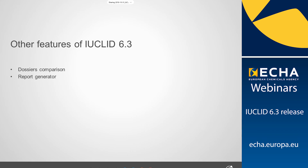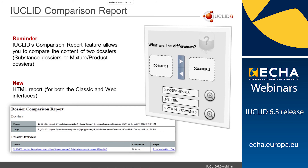Just to take you through a few other features included in this Euclid 6.3 release. First, the dossier comparison report — this feature allows you to compare the content of two dossiers, whether two substance dossiers or two mixture product dossiers. It gives you a field-content comparison so you can directly compare the differences between each field. With version 6.3, you can now generate an HTML report of this comparison, available from both the classic and web interface. We're planning improvements to this report in terms of naming conventions and navigation. If you have feedback on the comparison report, just get in contact with us.